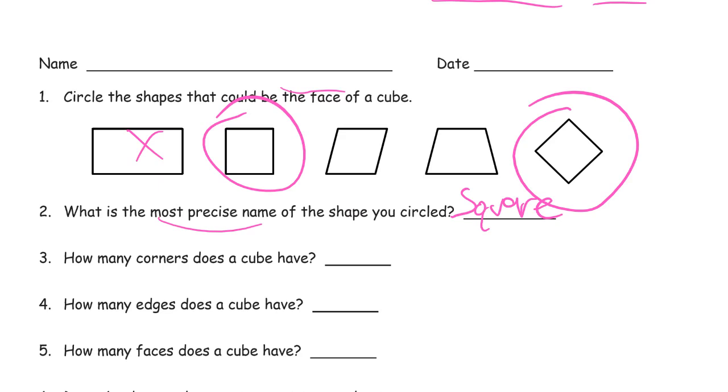How many corners does a cube have? A cube has, if you think about the top face of a cube, there's four corners on the top and four on the bottom. That's eight.